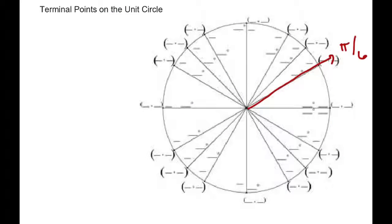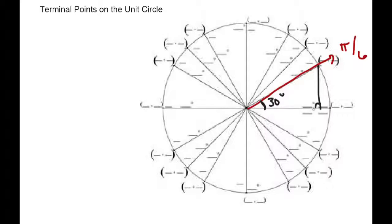Next we're going to determine the terminal points on the unit circle — the ordered pair where the terminal ray hits the unit circle. These are very special points. In order to do it, we're going to go back over a geometry concept. I want to find the point where the angle pi over 6, or 30 degrees, hits the unit circle.